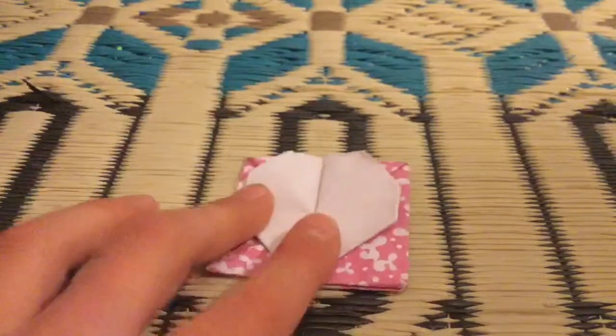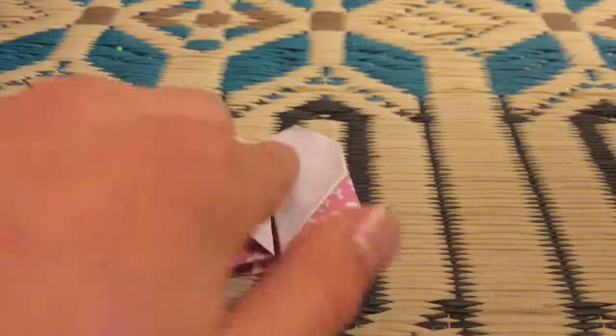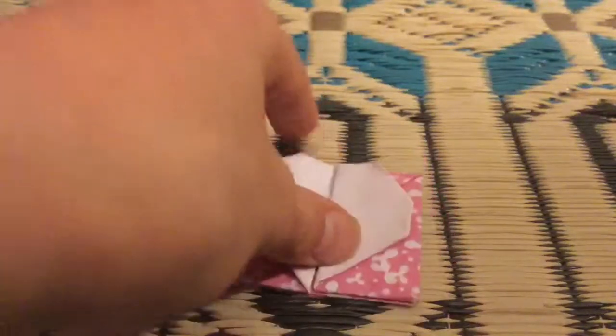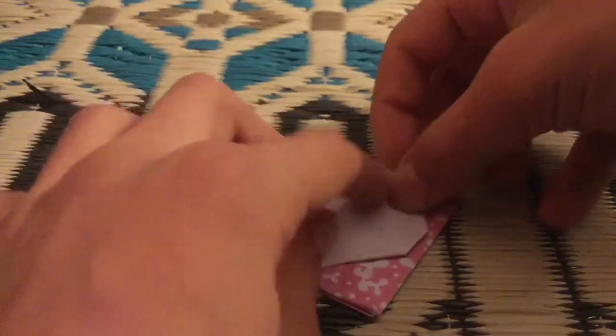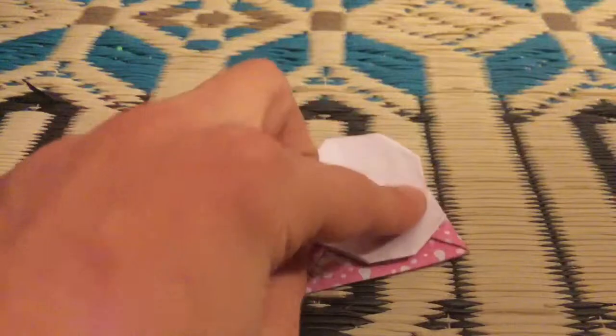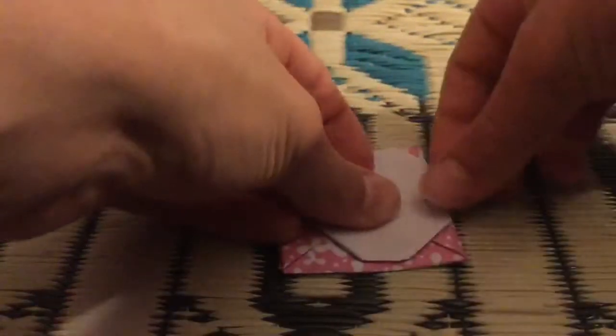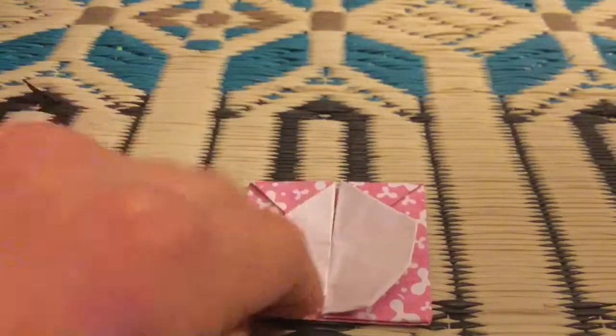Now it pretty much looks like a heart, except there should be a little bump right there. So what you're going to do is find that there's a little corner here, and you can pull it up, and then fold it over like that.